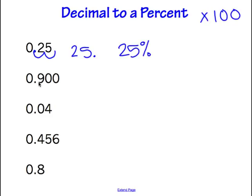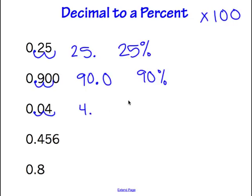Looking at the next one: multiplying by 100 and moving that decimal place over two spots gives us 90.0. We would just write this as 90%. The next one: moving the decimal over two places gives us 4. We're just going to write this as 4%.